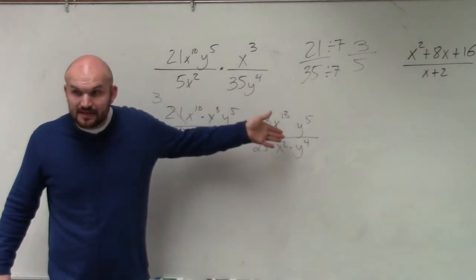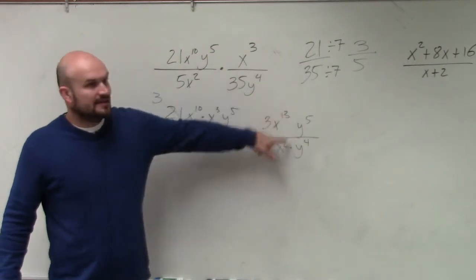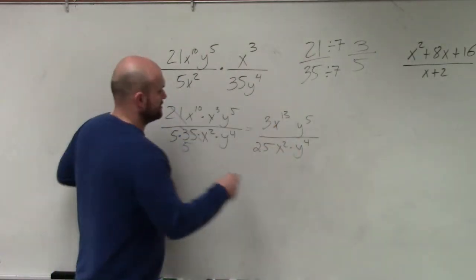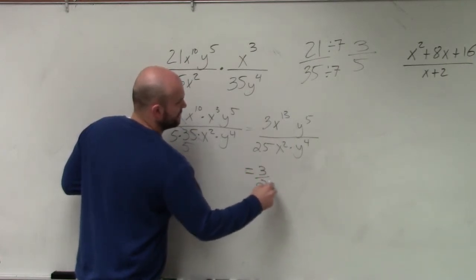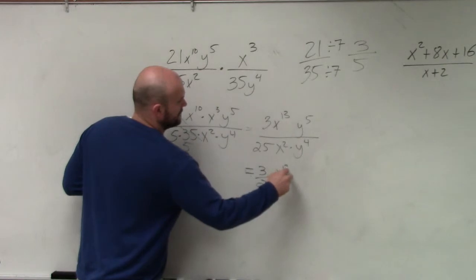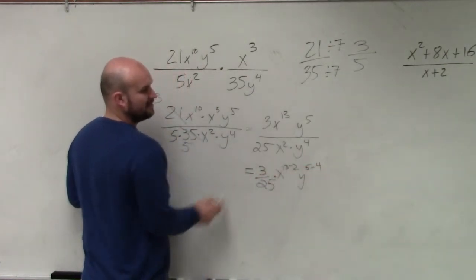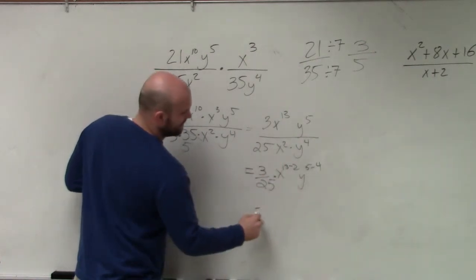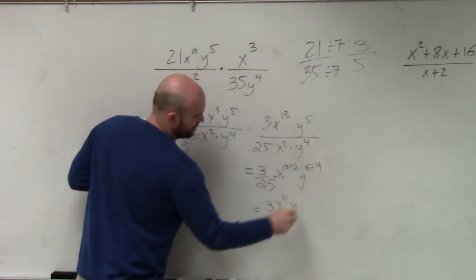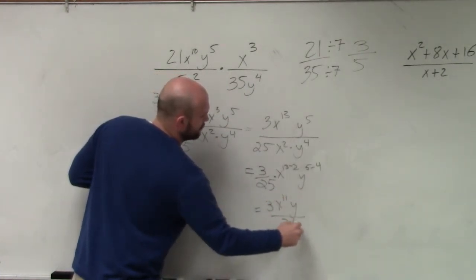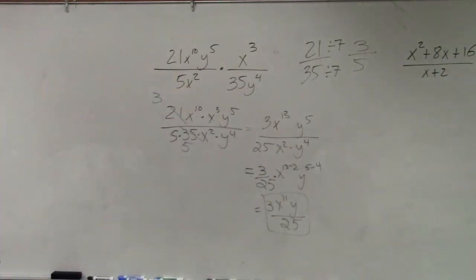But now we have this. And if you guys remember on this, now we have the quotient rule. Now we simplify these by subtracting the powers. So I have 3 over 25 times x to the 13th minus 2, y to the 5th minus 4. Well, that's going to be 11 and that's going to be 1. So my final answer is 3 x to the 11th, y to the 1st, all over 25. And that is your final answer.